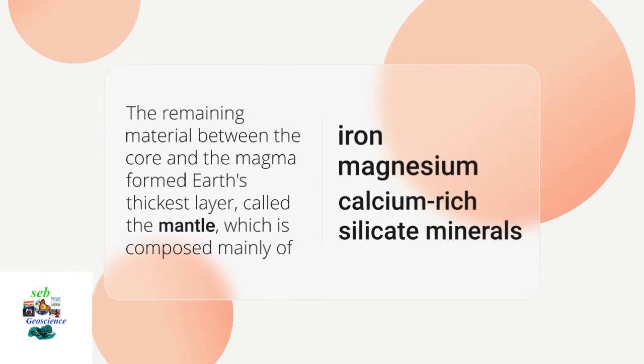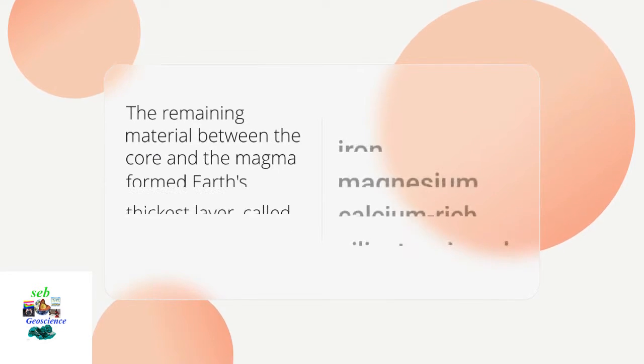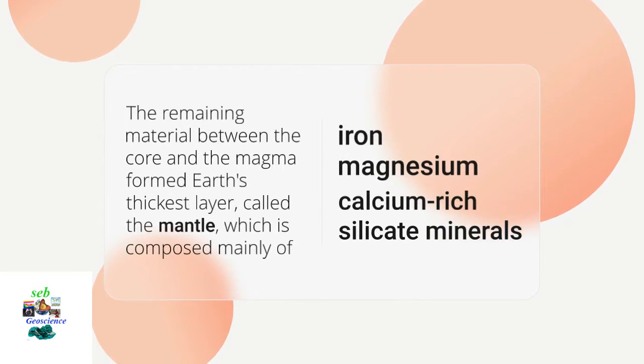The remaining material between the core and the magma formed Earth's thickest layer, called the mantle, which is composed mainly of iron, magnesium, and calcium-rich silicate minerals.